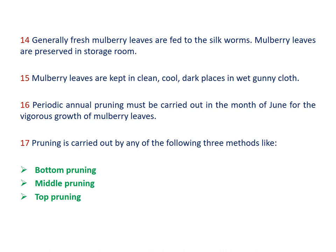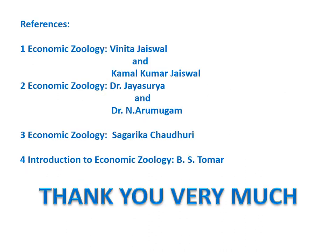Fresh mulberry leaves are fed to the silkworms. Mulberry leaves are preserved in a storage room, kept in clean, cool, dark places in wet gunny cloth. Periodic annual pruning must be carried out in June for vigorous growth. Pruning is done by three methods: bottom pruning — the plant is cut at 30 cm above ground level; middle pruning — cut at 60 to 70 cm above ground level; and top pruning — the plant is cut at 3 to 4 feet above ground level.